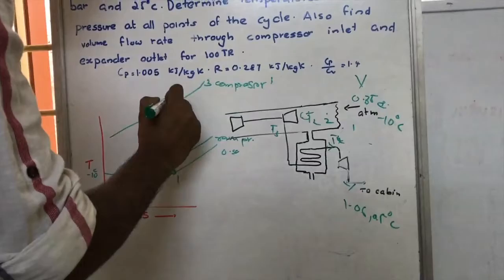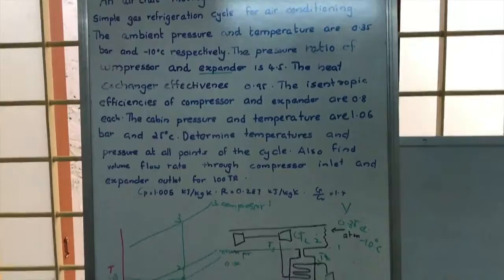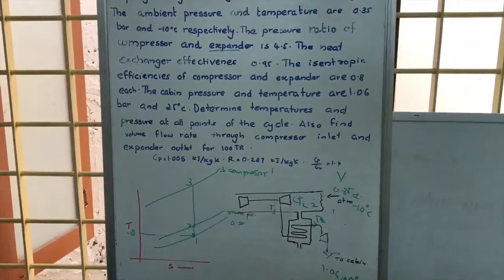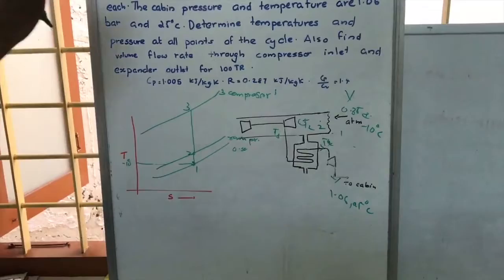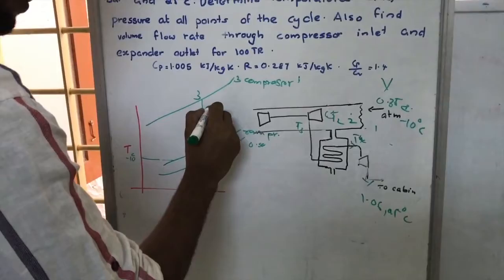More work than ideal must be supplied to the compressor due to the efficiency of 0.8. The ideal work is M·Cp·(T3 - T2), where M is the mass flow rate of air through the compressor and Cp is the specific heat at constant pressure. T3 minus T2 is the temperature difference across the compressor.